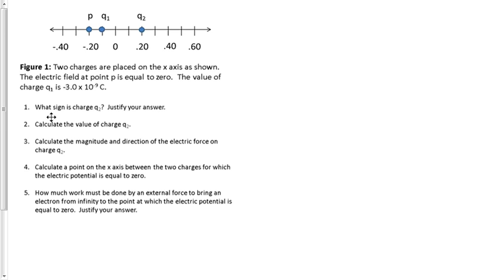But the first question is, what is the sign of charge Q2, and justify your answer. Well, if electric field is zero, then we need to get electric field vectors in two different directions, and we see that negative 3 times 10 to the minus 9 Coulombs is the value for charge 1. Therefore, we will assume a positive test charge located at P that will be attracted to the value of Q1.